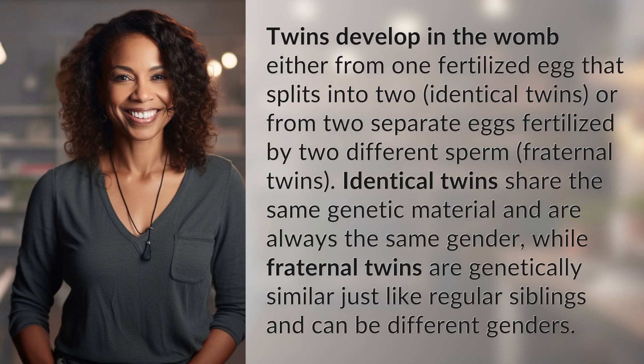Twins develop in the womb either from one fertilized egg that splits into two — identical twins — or from two separate eggs fertilized by two different sperm — fraternal twins. Identical twins share the same genetic material and are always the same gender, while fraternal twins are genetically similar just like regular siblings and can be different genders.